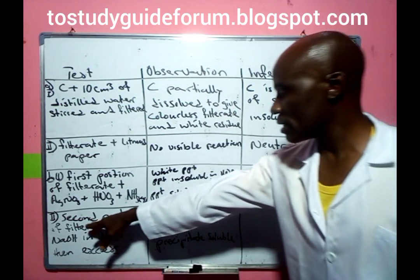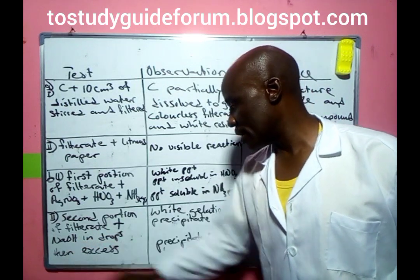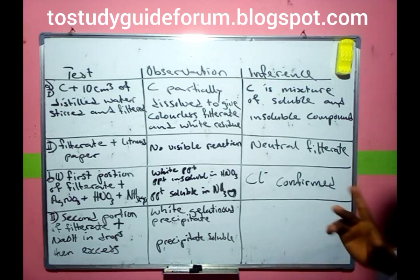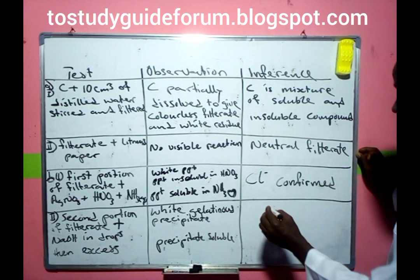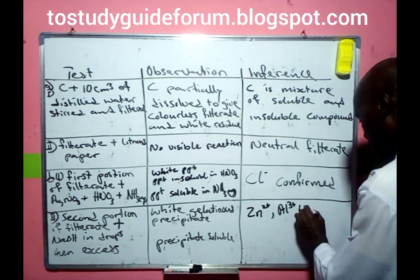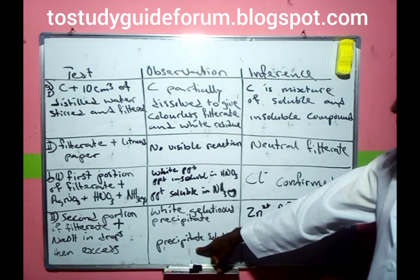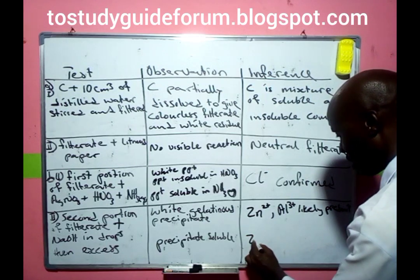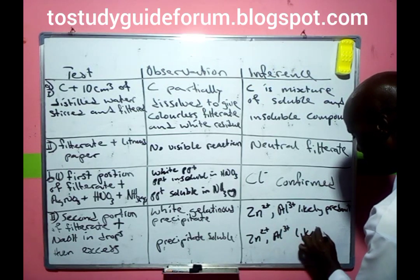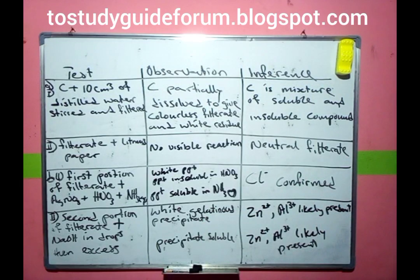For the second portion of the filtrate, we add sodium hydroxide in drops then in excess. We observe a white gelatinous precipitate that is soluble in excess NaOH. There are two ions that can give this kind of observation: zinc ion and aluminum ion — both are likely present at this stage, since either can produce a white gelatinous precipitate soluble in excess sodium hydroxide.